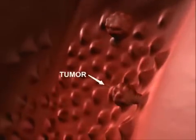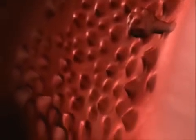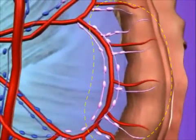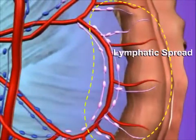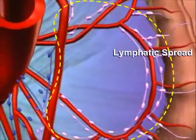Over a period of several years, a polyp has the potential to become cancerous. A cancerous polyp grows rapidly in size, eventually breaking through the wall of the colon and spreading through tiny channels called lymph vessels.